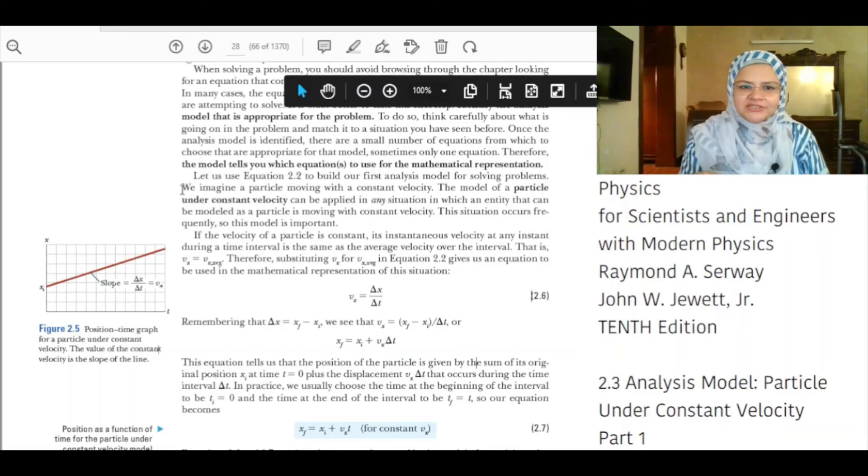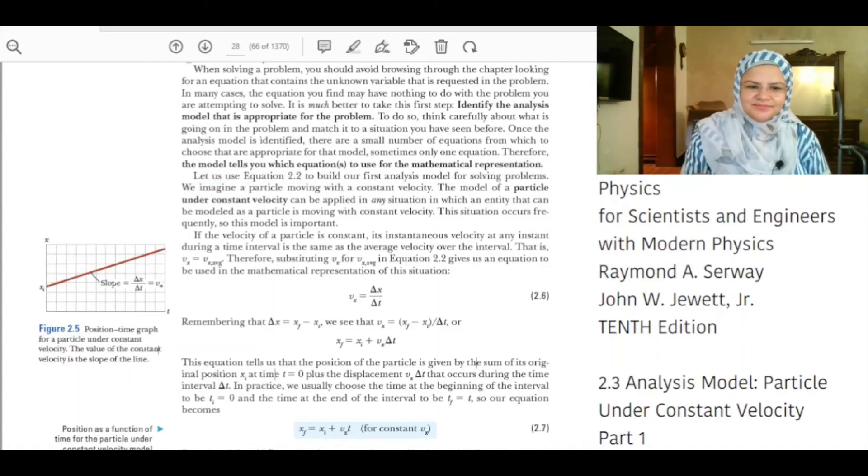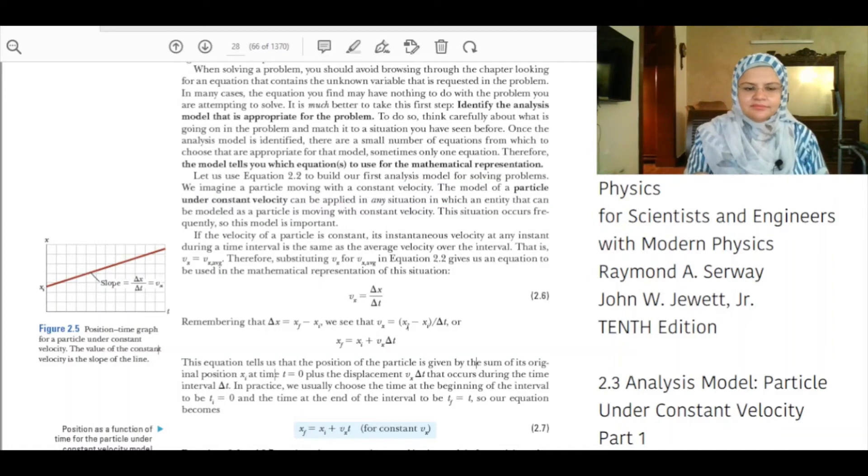We imagine a particle moving with a constant velocity. The model of a particle at constant velocity can be applied in any situation in which an entity that can be modeled as a particle is moving with constant velocity. This situation occurs frequently, so the model is important.